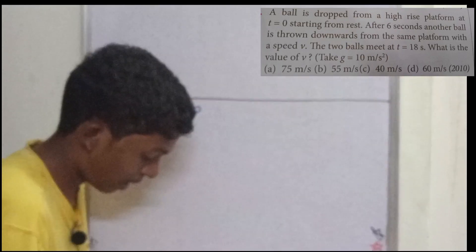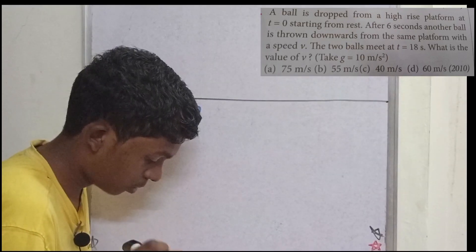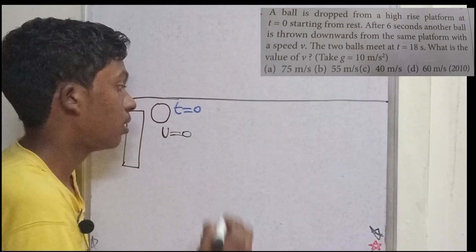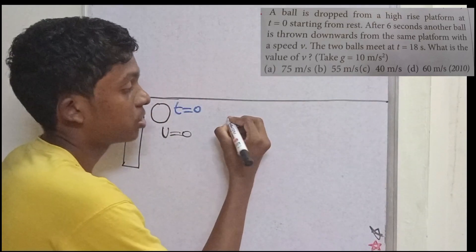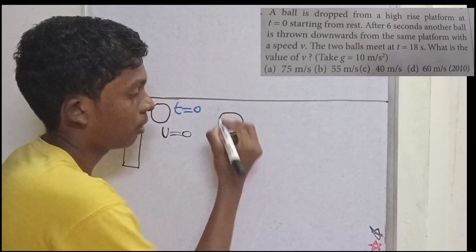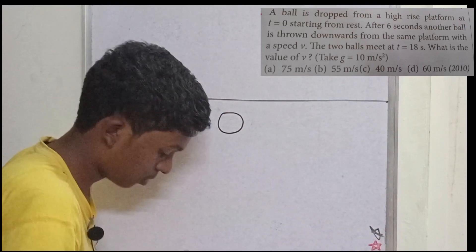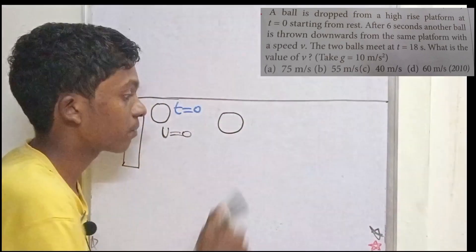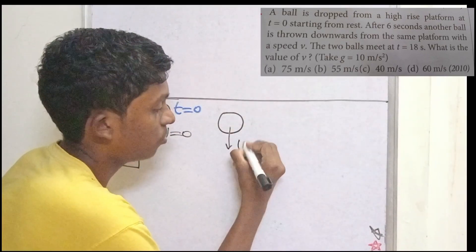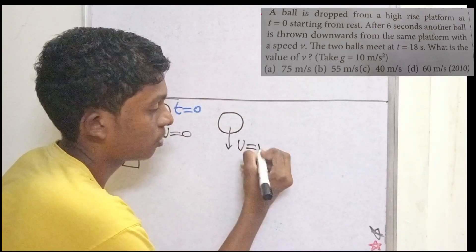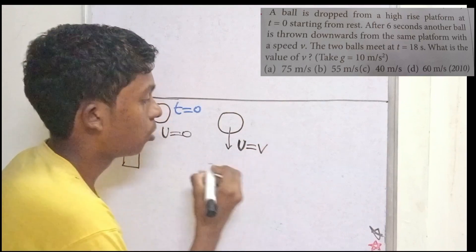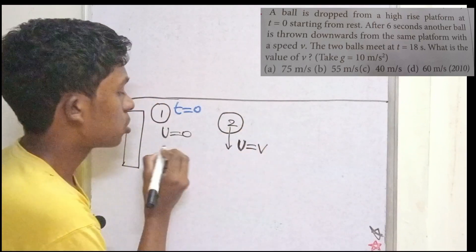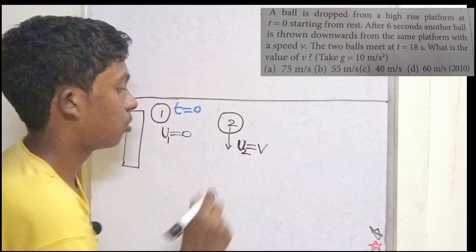After 6 seconds, another ball is thrown downwards from the same platform with a speed V. The first ball has initial velocity U1 equal to 0, and the second ball has initial velocity U2 equal to V. The second ball is thrown at T equal to 6 seconds.